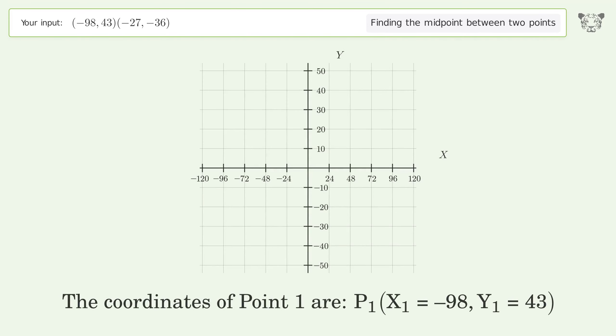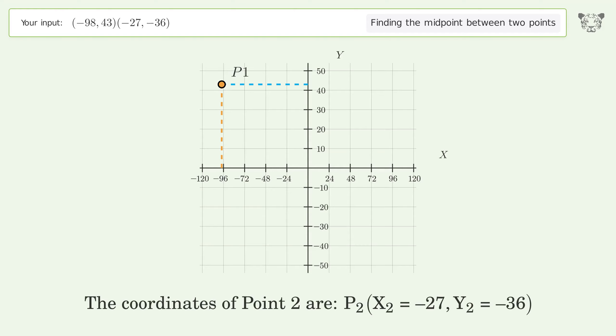The coordinates of point 1 are x1 equals negative 98, y1 equals 43. The coordinates of point 2 are x2 equals negative 27, y2 equals negative 36.